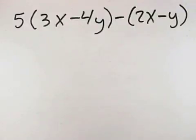In this problem, we have two sets of parentheses, so we'll use the distributive property two times to eliminate those parentheses.